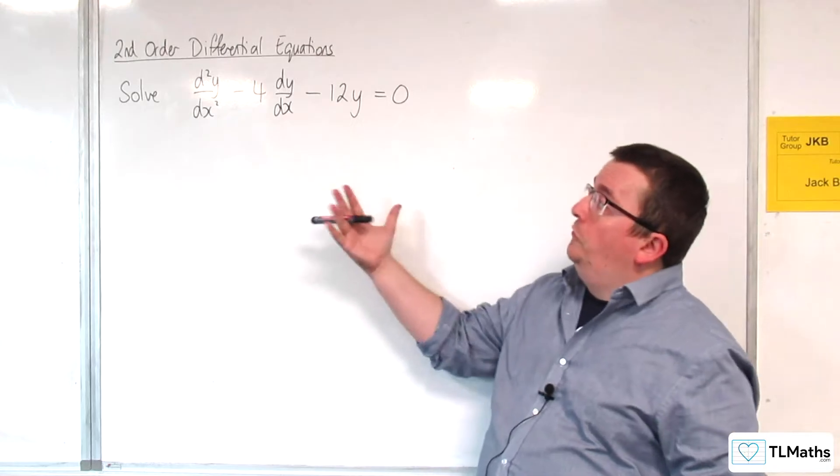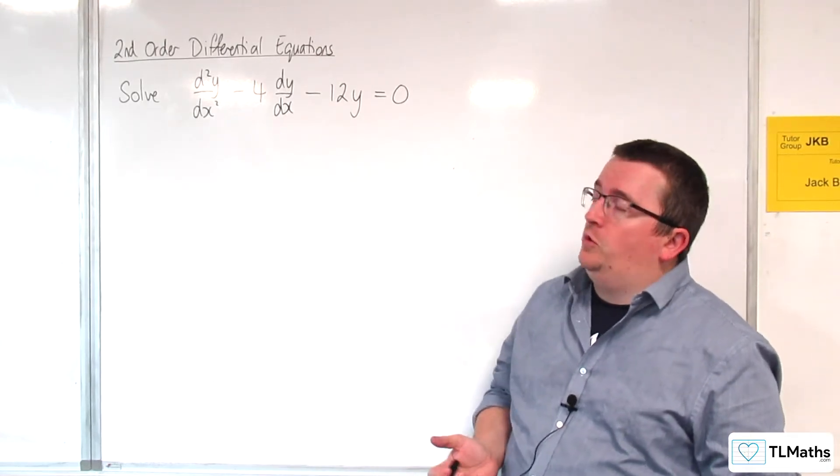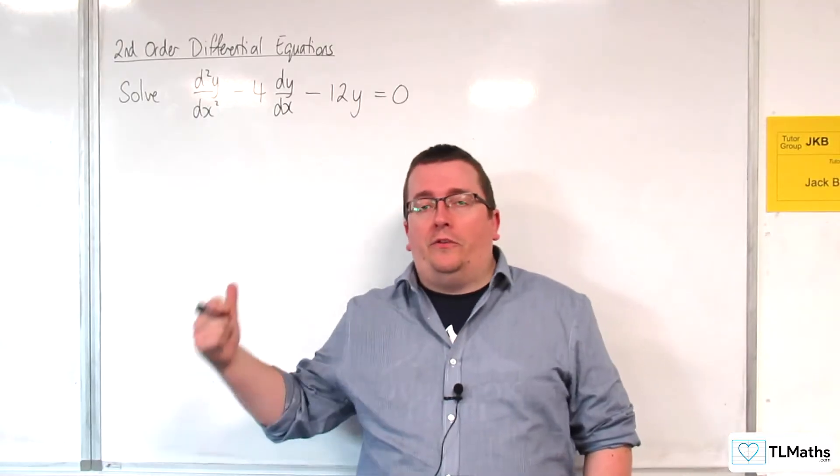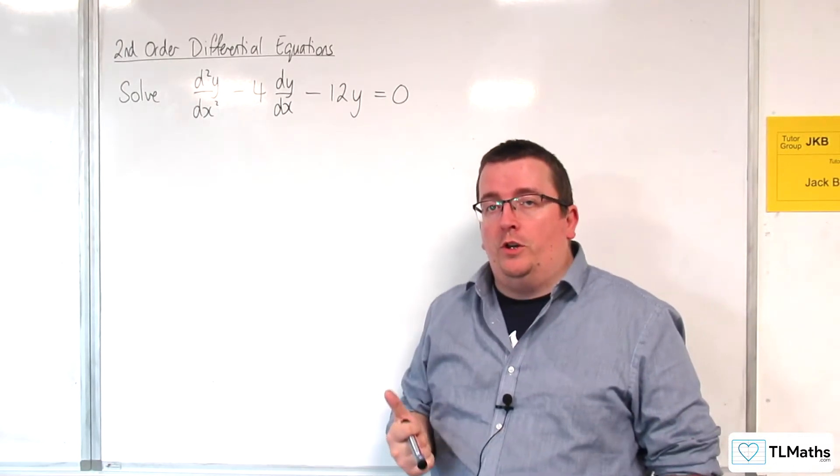In this video, we're going to solve d²y/dx² - 4dy/dx - 12y = 0. This is a second order differential equation, homogeneous equation.